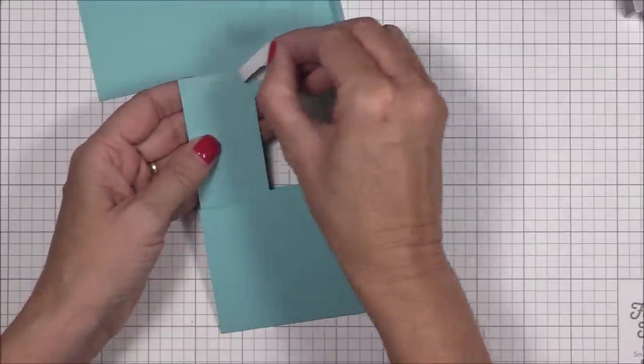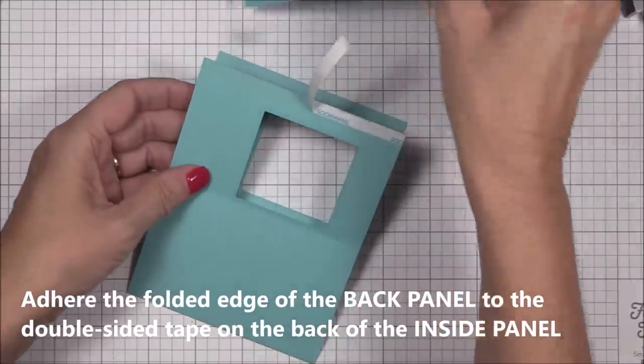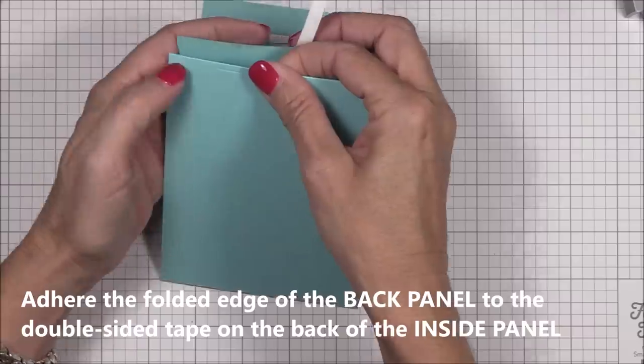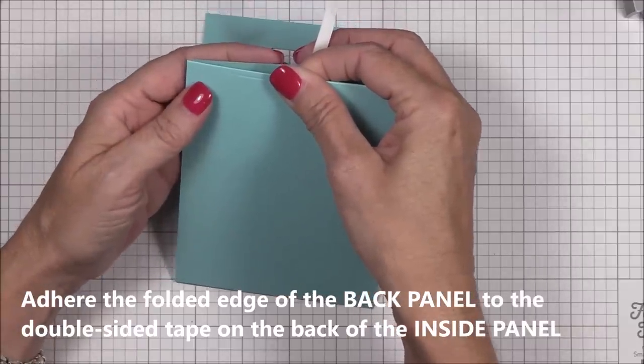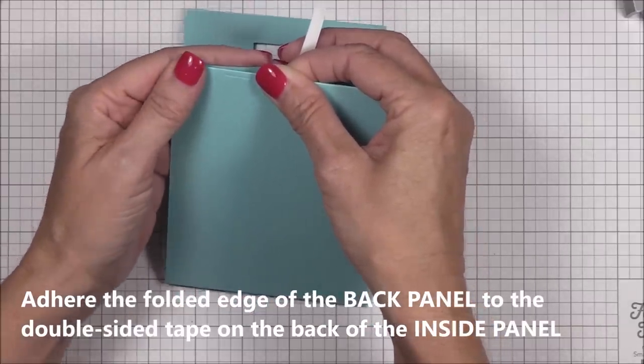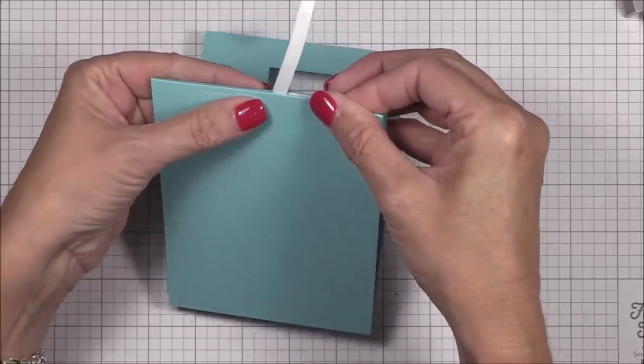I'm partially removing the release paper from the double sided adhesive and I'll fold that back. I always like to do this with strong adhesive to give myself a little bit of grace when sticking things together. Now I'll adhere the folded edge of the back panel to that double sided adhesive and what you'll end up with is a sort of a z-shaped card base.